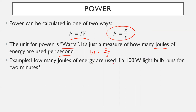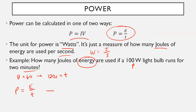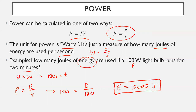Example: how many joules of energy are used if a 100-watt light bulb runs for two minutes? Power is 100 W and time is two minutes. Convert minutes to seconds: 2 minutes × 60 = 120 seconds. Using P = E/t: 100 = E/120. Multiply both sides by 120: E = 100 × 120 = 12,000 joules. Never forget your units — you need units on everything you calculate.